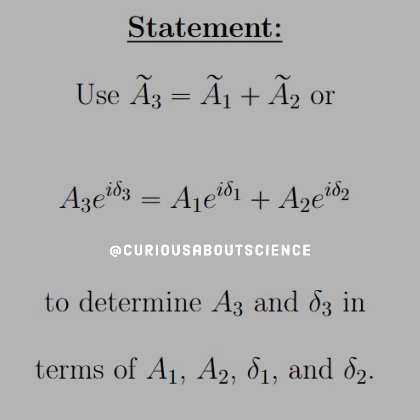And that's what we have here. What we have for the statement is use ã₃ equals ã₁ plus ã₂, which is a complex amplitude, which can be written in the form of A₃e^(iδ₃), which is the phase. Delta is the phase shift, assuming there is one. And then since it's a complex amplitude, we have one for ã₁ and ã₂ as such. And what we want is to determine A₃ and δ₃ in terms of A₁, A₂, δ₁, and δ₂.